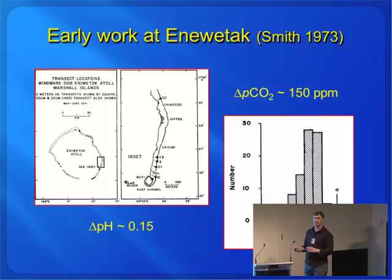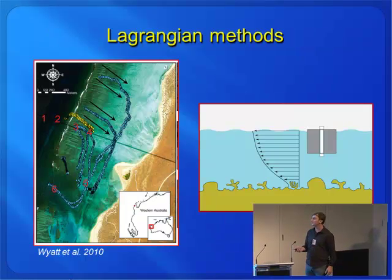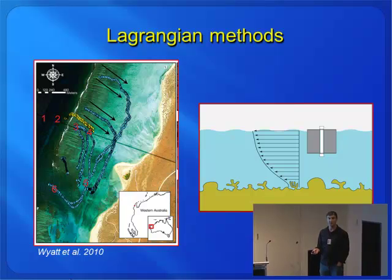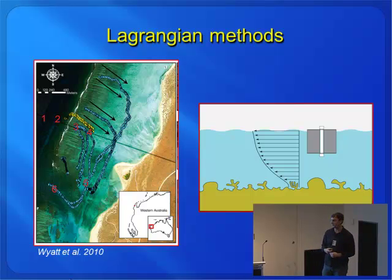So the question is, what's driving those changes? We know they're happening, but we want to understand more about what's causing them. A lot of these studies were done by just following drifters across the reef flat and measuring the changes in carbonate chemistry. By looking at the changes in chemistry as a parcel moves across the reef flat, you can actually work out production. That's fairly useful, but it doesn't get at the underlying physics driving the process. The underlying physics is a very key component.